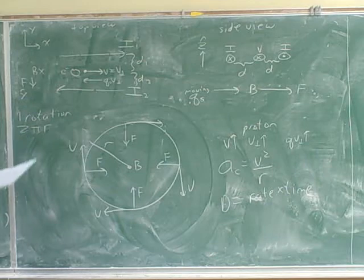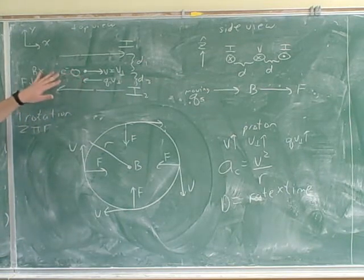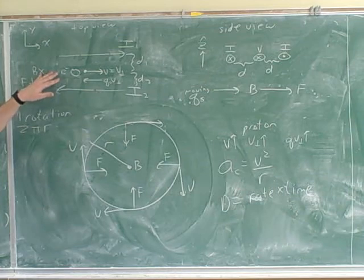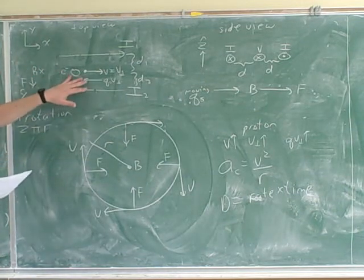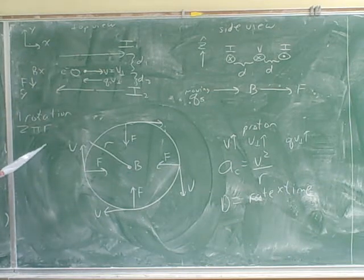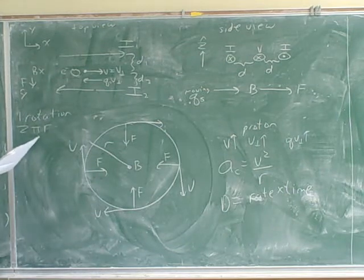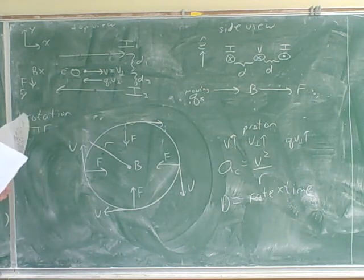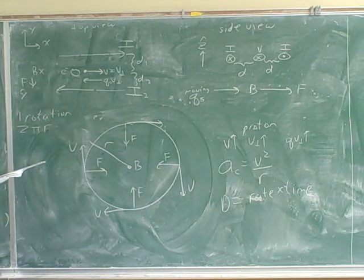So the only point of saying that the speed was very small was just to say that we're not going to move very far from where we started. So we can approximate the magnetic field as being approximately uniform. So since we approximate that as being uniform, we can assume the shape here. So the answer here is that we're going to go through circular motion.